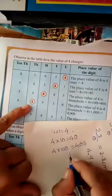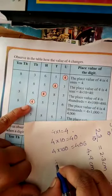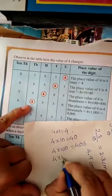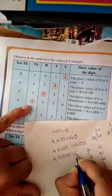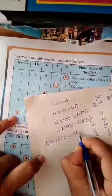In this case, 4 is in the 1000 place, therefore its place value is 4 into 1000, equals 4000. Last one, 4 is in the 10,000 place, therefore its place value is 4 into 10,000 equal to 40,000.